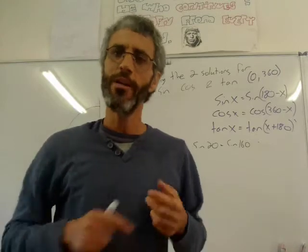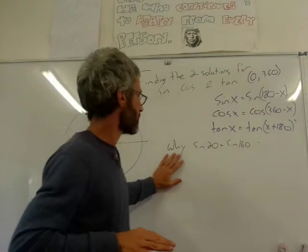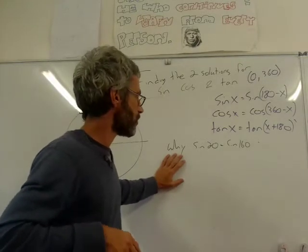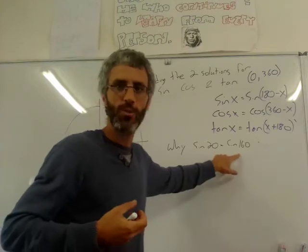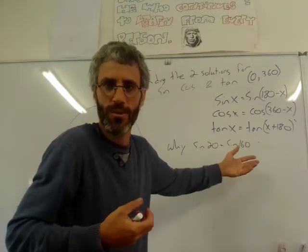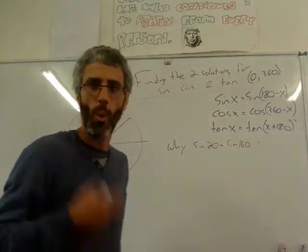I'm not just drawing a graph. So I'm trying to explain the answer why sine 20 will be equal to sine 160. I mean why did I come up with 160? Because 160 is 180 minus 20. Why can I use that rule? Why?